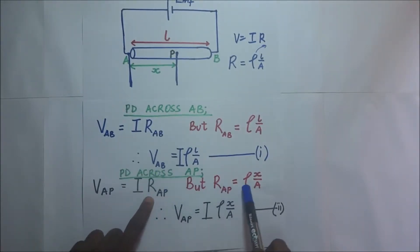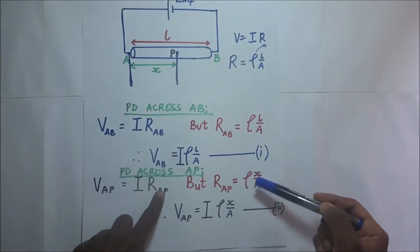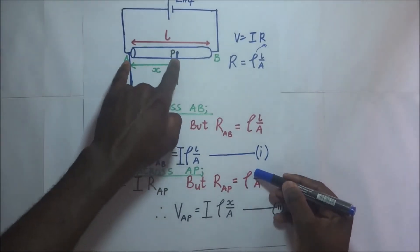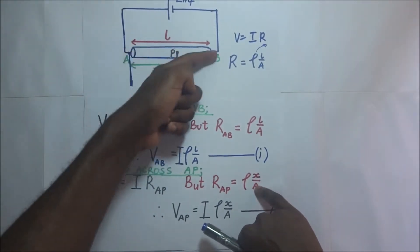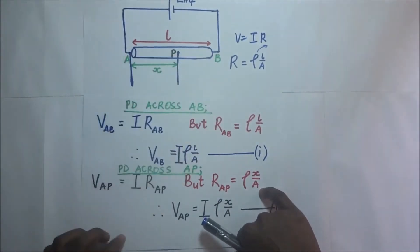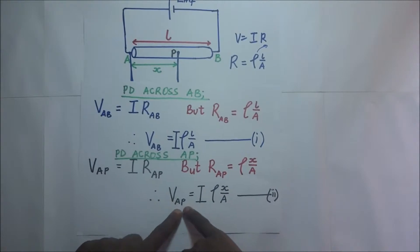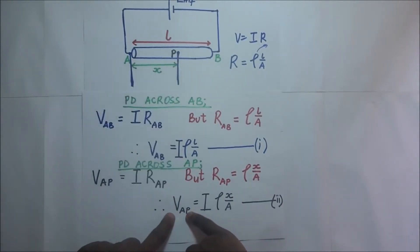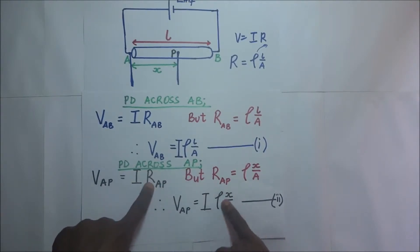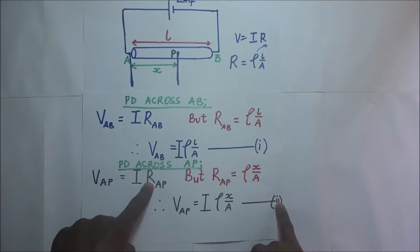We know that R_AP is equal to the resistivity of this same wire times X over A, where X is the length of that portion of the wire and A is the cross-sectional area — the same wire as before. Therefore the voltage across portion AP is the current times R_AP, substituting that expression, which constitutes our second equation.